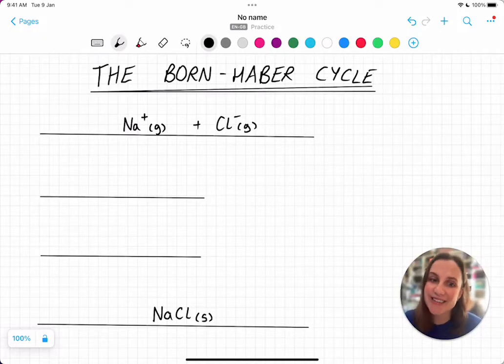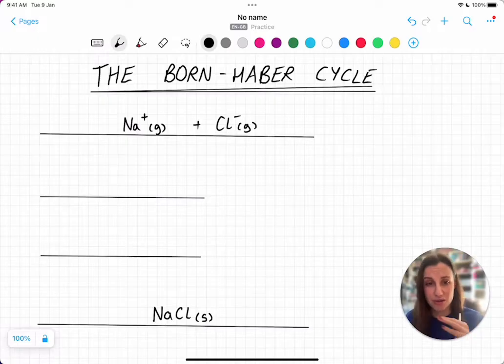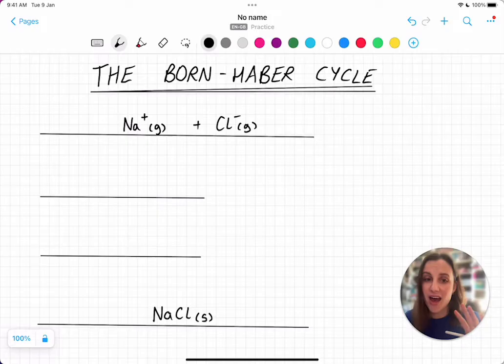The Born-Haber cycle is just a fancy version of a Hess Law cycle, nothing more than that. So if you're struggling with this, just check that you can do other Hess examples because it might be that that's holding you back versus this specific example.